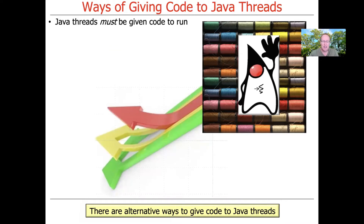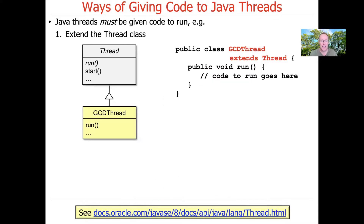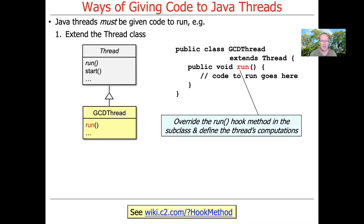There are several different ways to give code to Java threads. The easiest way, though not necessarily the best, is to simply extend the Thread class. This uses good old inheritance — an object-oriented programming feature from about 40 to 50 years ago. All you need to do is say 'public class GCDThread extends Thread.' Once you do that, it's your obligation to fill in the run hook method, which is where you put the code that will execute when the thread is started. You can read the link at the bottom to learn more about what a hook method is.